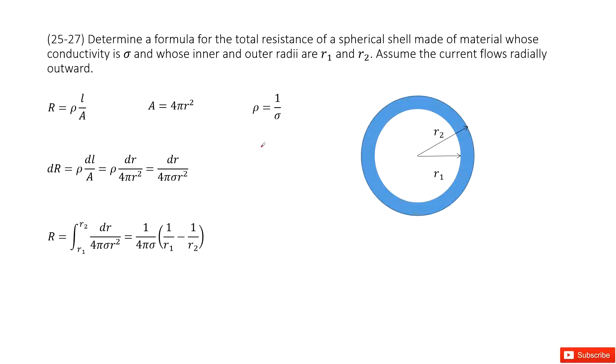Chapter 25 is electric currents and resistance. You can see we need to find the total resistance of spherical shells made of materials whose conductivity is rho.